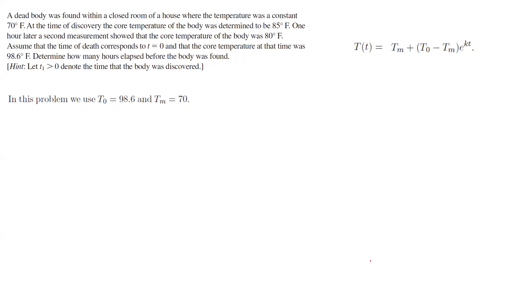T sub 0 is equal to 98.6. The temperature at time 0 is 98.6 degrees. And Tm, which is the ambient temperature, is 70 degrees. So if you plug those into the equation that you have, first of all, notice that at the time of discovery, the core temperature was 85 degrees. So T, the temperature, is 85 degrees. And on the other side, you have Tm, which is the ambient temperature, 70 degrees plus 98.6 minus 70 e to power Kn.